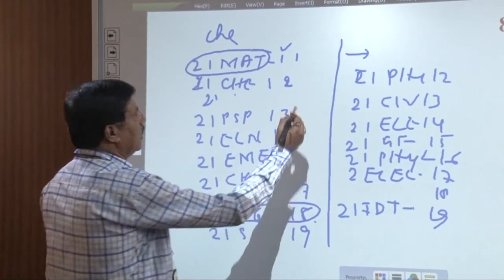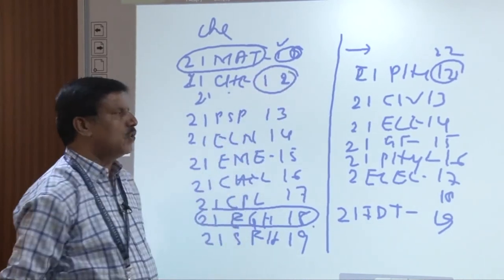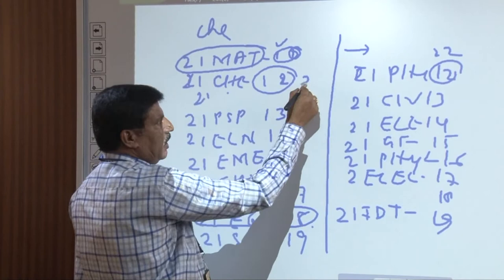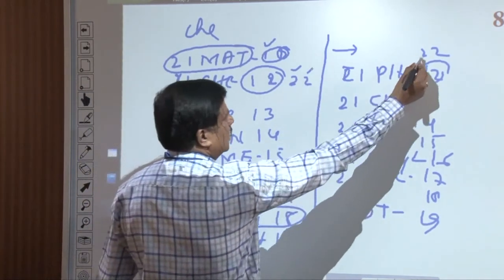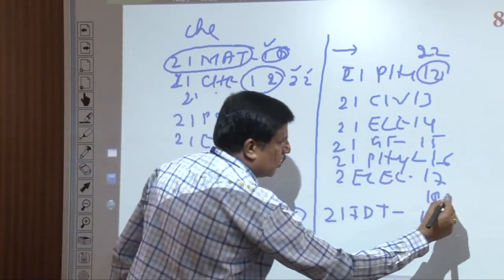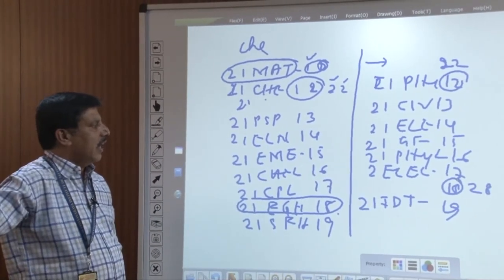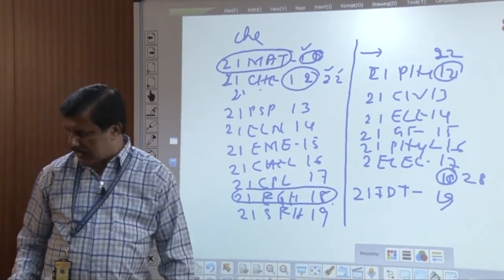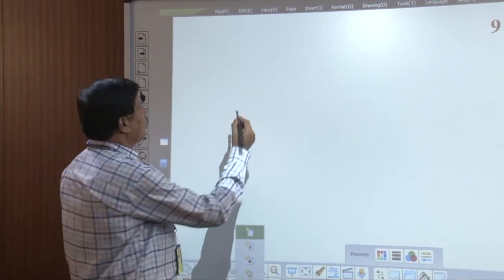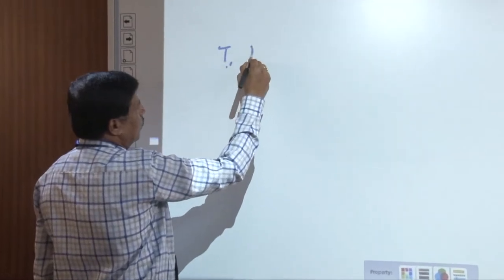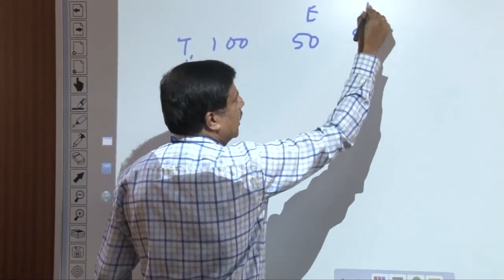When you go to second semester, the subject codes change: the first digit after '21' becomes '2' instead of '1'. For example, 21CHE12 becomes a second semester subject. Physics cycle students switch to this side in second semester. Mathematics becomes 22, and English becomes 28. You study two subjects each of English and Mathematics across the two semesters.